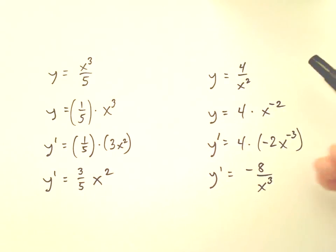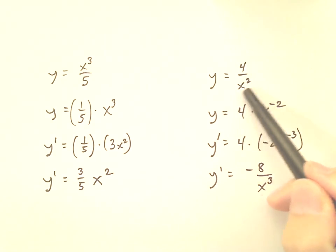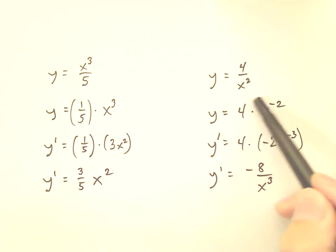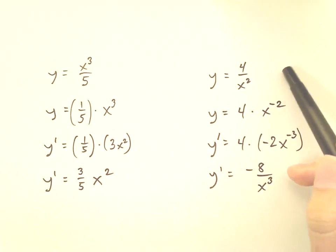Of course, more complicated functions will involve more work. In particular, when you have a complicated function in the denominator, you may find yourself raising the whole entire denominator to negative one and then using a chain rule or something. But even then, it'll still be quicker and easier to do it this way than to use the quotient rule.